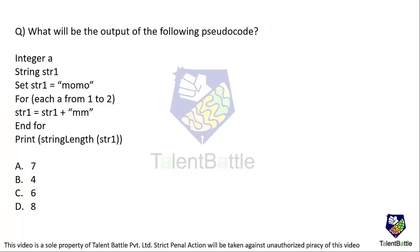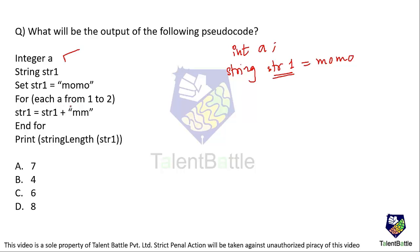Next question: what is the output of the following pseudocode? We have an integer a and a string str1 set to 'momo'. There is a for-each loop: for a from 1 to 2. This loop executes two times, and inside the loop str1 = str1 + 'mm', so we are concatenating 'mm' to the string each iteration.